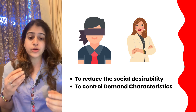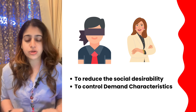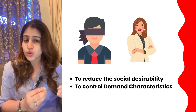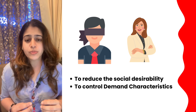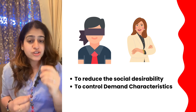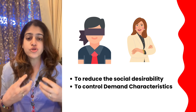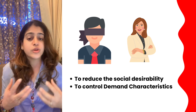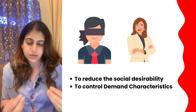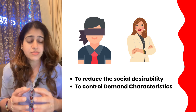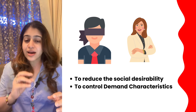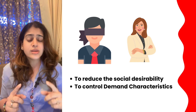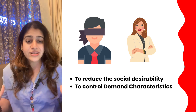Why don't we want participants to know which condition they are in? The simple answer is to control demand characteristics and social desirability. Demand characteristics is when participants get a hint of what the study is about, and social desirability is when you tend to behave in a more socially accepted manner — you fake or pretend, altering your true behavior. So the researcher keeps participants blind to avoid this.